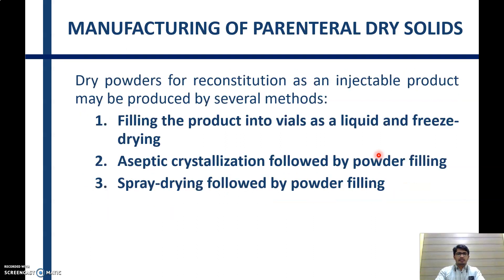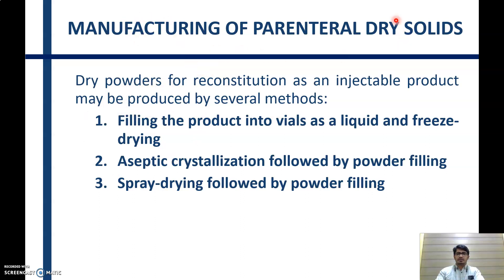Let's see what are the different methods for manufacturing of parenteral dry solids. It can be done by three methods: filling the product into vials as liquid then freeze drying, or aseptic crystallization followed by powder filling, or spray drying followed by powder filling. These are the three methods usually performed for the manufacturing of parenteral dry solids.